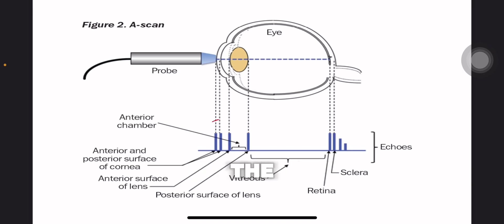So the first echo here, or the first peak, comes from the anterior surface of the cornea. Then the second one comes from the posterior surface of the cornea, and so on and so forth.